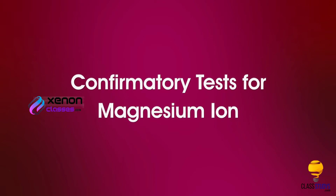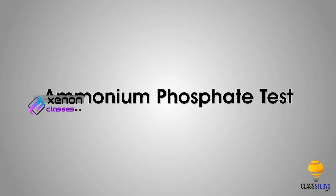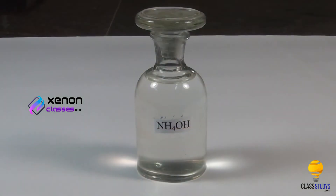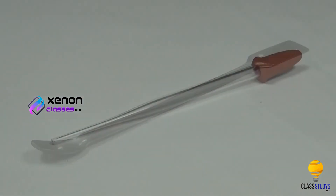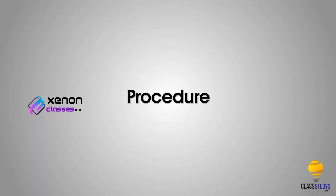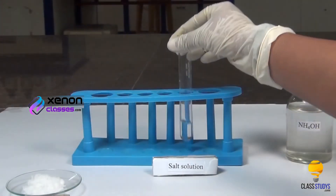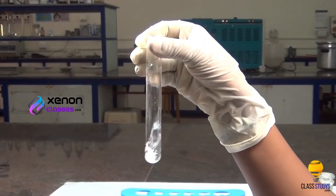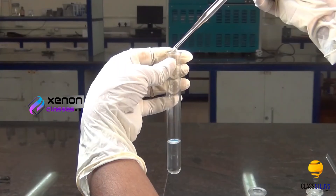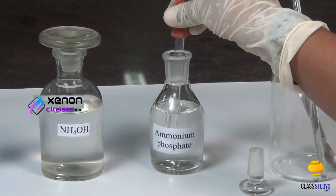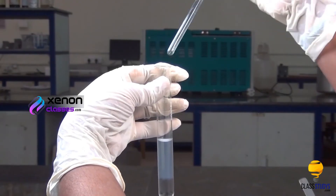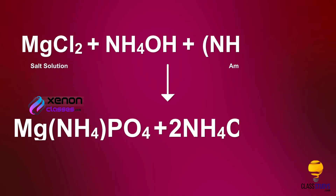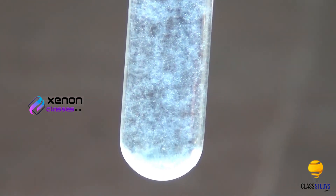Next, we look at the confirmatory tests for magnesium ion. Ammonium phosphate test. Materials required: salt solution in a test tube, ammonium chloride, ammonium hydroxide, spatula, dropper, and glass rod. Procedure: take a small quantity of salt solution in a test tube. To this, add a small quantity of ammonium chloride using a spatula. Shake the test tube well. Using a dropper, add a small quantity of ammonium hydroxide to the test tube. Then, add a small quantity of ammonium phosphate solution to the test tube. Now, scratch the inner sides of the test tube using the glass rod. A white precipitate of magnesium ammonium phosphate is formed due to the reaction of magnesium ions with ammonium phosphate.